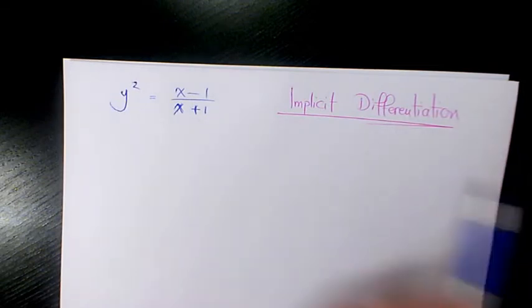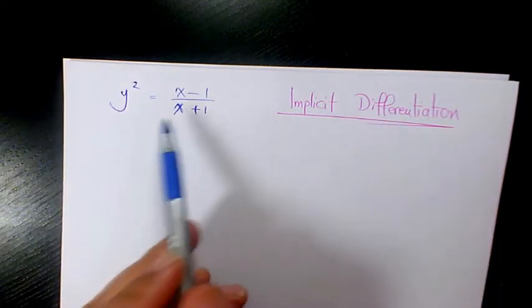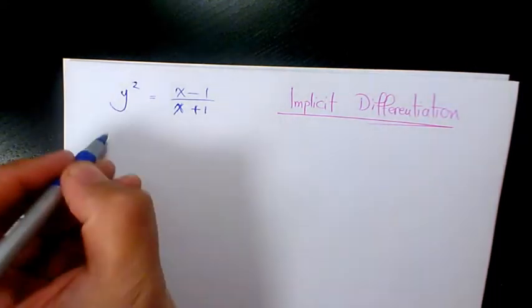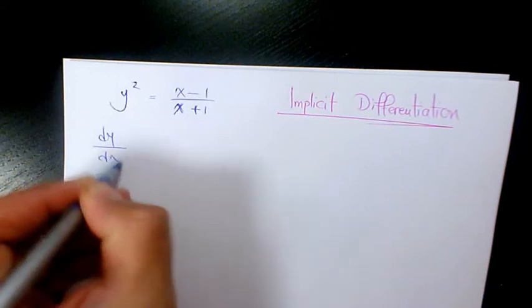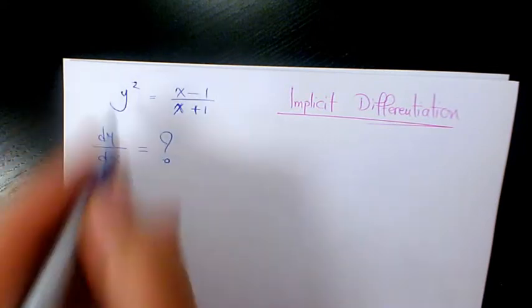We need to use implicit differentiation. Why? Because y is not totally isolated. We're finding dy over dx.